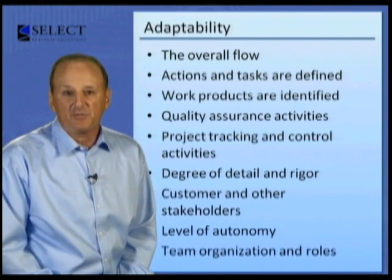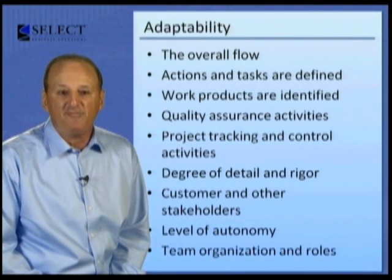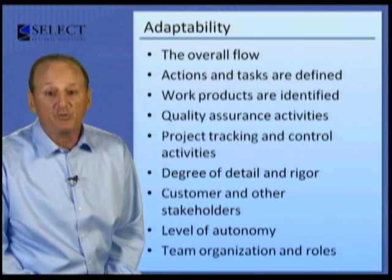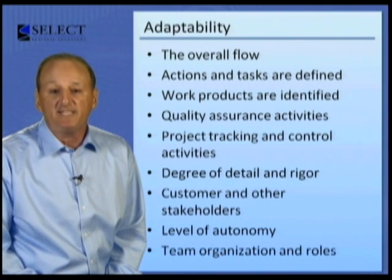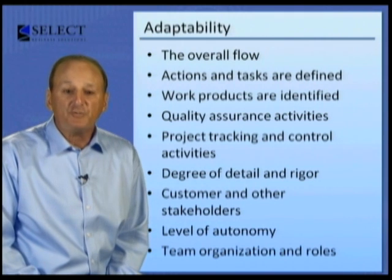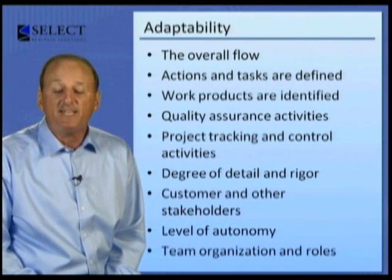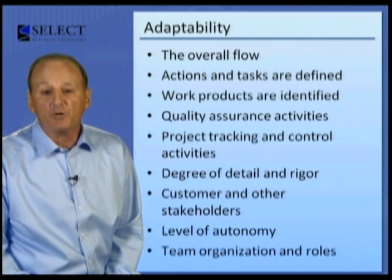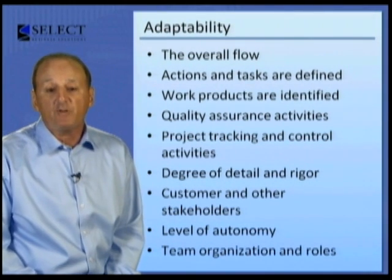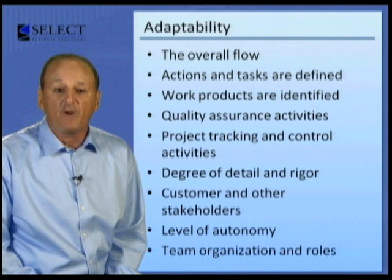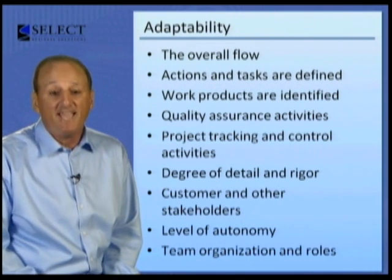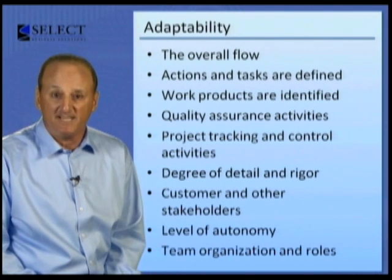It's very important to understand that we must adapt any process in order to make it effective. As a team applies the software process, it adapts each of these quality elements: the overall flow of activities, actions, and tasks and the interdependencies among them; the degree to which actions and tasks are defined within each framework activity; the degree to which work products are identified and required; the manner in which quality assurance activities are applied; and the manner in which project tracking and control activities are applied.